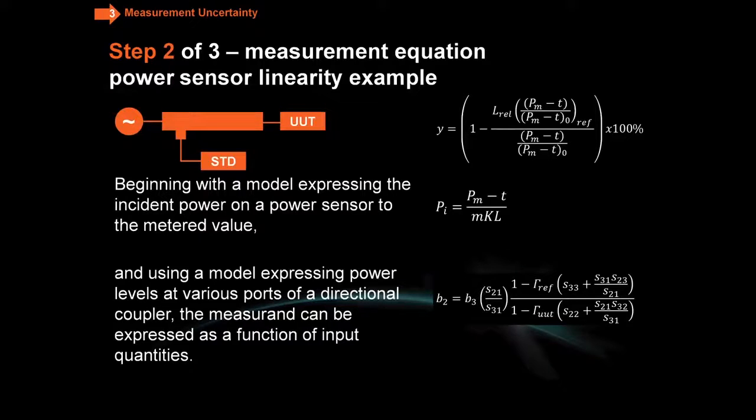Now let's move to step two. We start beginning with a model expressing the incident power on the sensor to the metered value, and you see that equation over there on the right, the second one down. Then we use a model expressing the power levels at the various points of a directional coupler, and now the measurant can be expressed as a function of the input quantities, and that's combining these two equations. You see that down below on the bottom there.